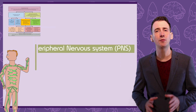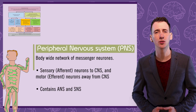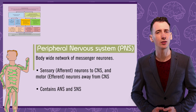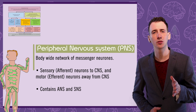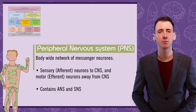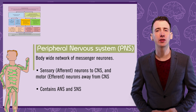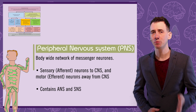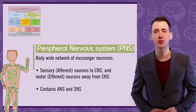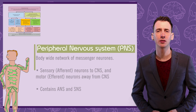The peripheral nervous system is a body-wide network of messenger neurons that collect sense impressions and deliver instructions to the body from the CNS. Sensory or afferent neurons deliver information to the CNS, and motor or efferent neurons transmit information away from the CNS.